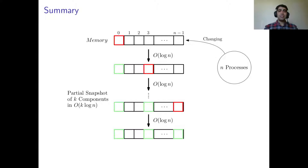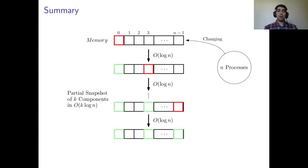Here you see an example of such a procedure. A process first reads the zeroth component. Then, based on the value of the zeroth component, it decides to read the third component, and so on. Note that all of the k-components that this process reads belong to a consistent view of the memory.